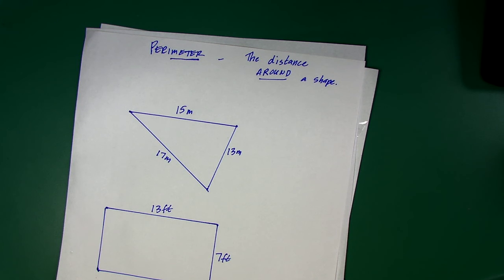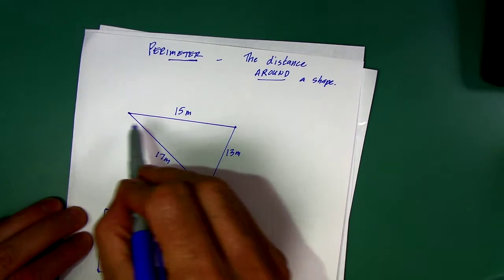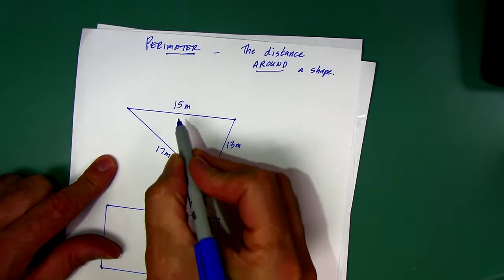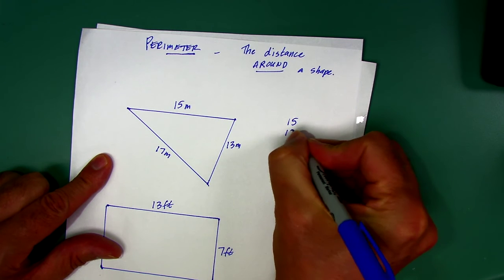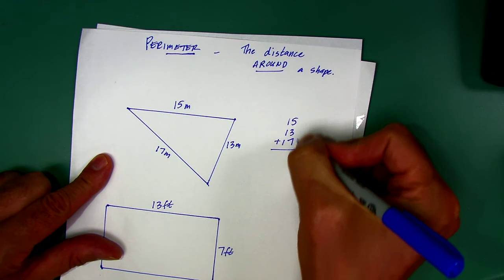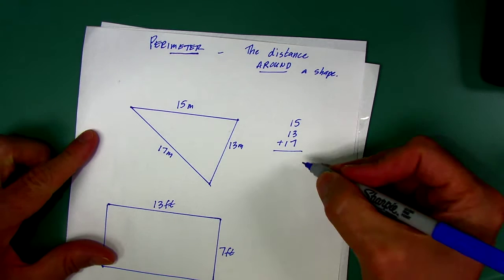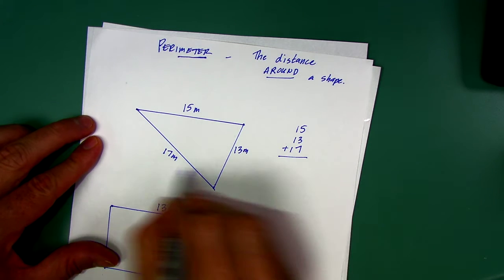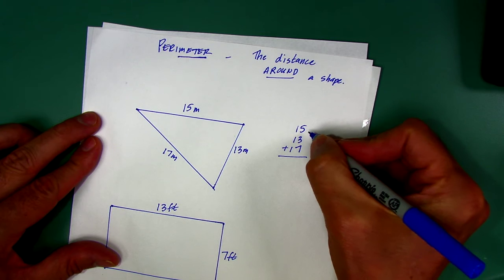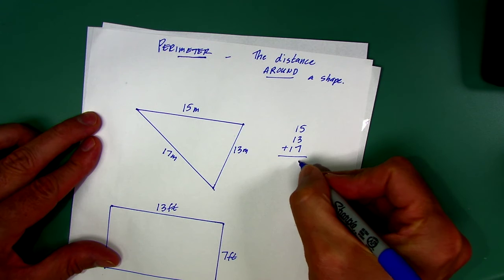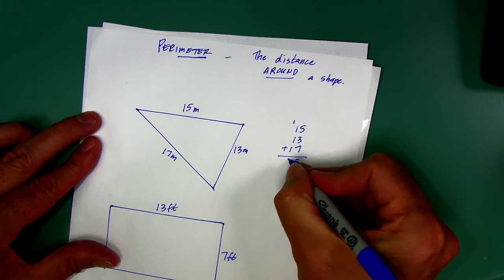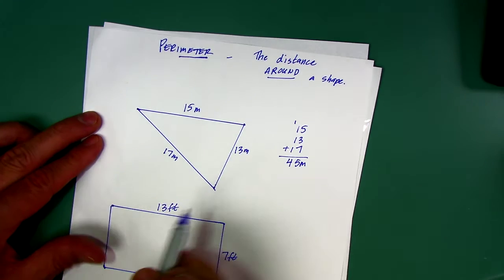We currently have a fire burning in Sonoma County, and when it is 100% contained, that's when the firemen are pretty sure that the perimeter will not grow. They have it completely boxed in. So in this case, you would just add 15 plus 13 plus 17. Whenever you add things, I think it's easier if you write it vertically. 5 plus 3 is 8, plus 7 is 15. That is 45 meters, the distance around that triangle.